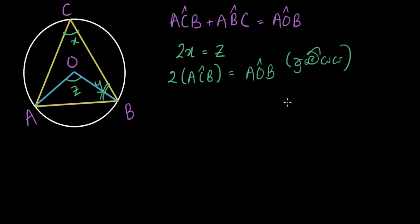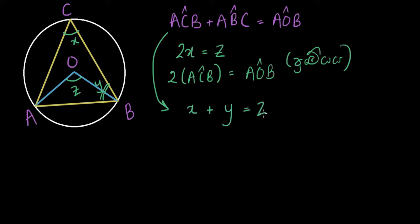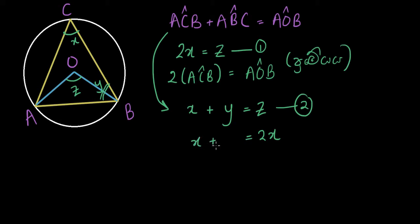The method is not a little difficult for teachers. Now, we have a simple method for ACB, ABC, and AOB. So we don't have to call x, y, z. ACB equals x equals y equals z. So x equals y equals x, and y equals x equals x.